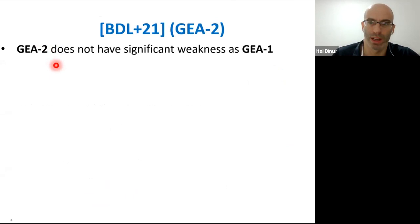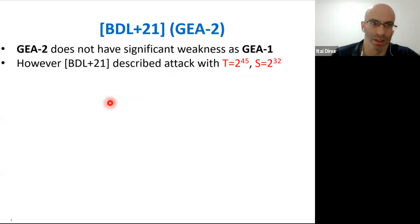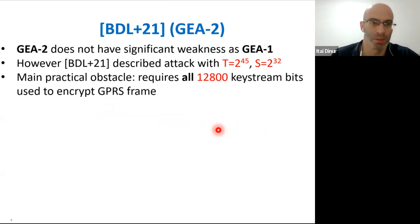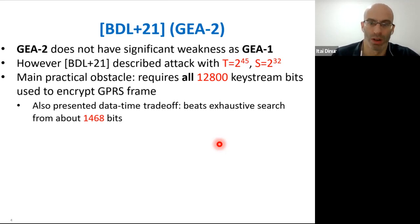For GEA2, there is no significant weakness as in GEA1. However, the authors still described an attack with time complexity 2^45, but the main practical obstacle is that it requires 12,800 keystream bits encrypting a full GPRS frame. The previous paper also presented a data-time trade-off that beats exhaustive search, but only given at least 1,400 bits of known keystream.